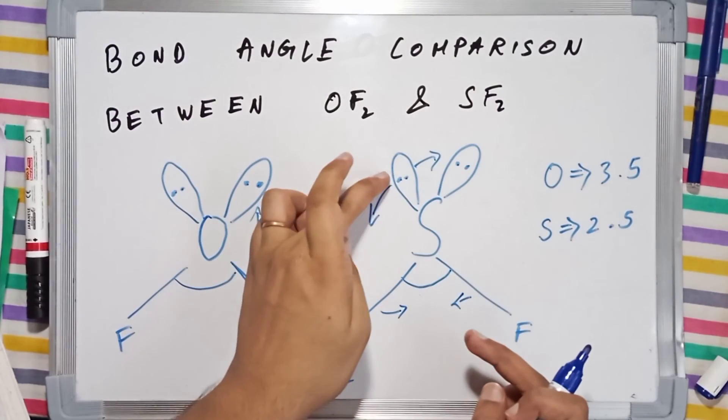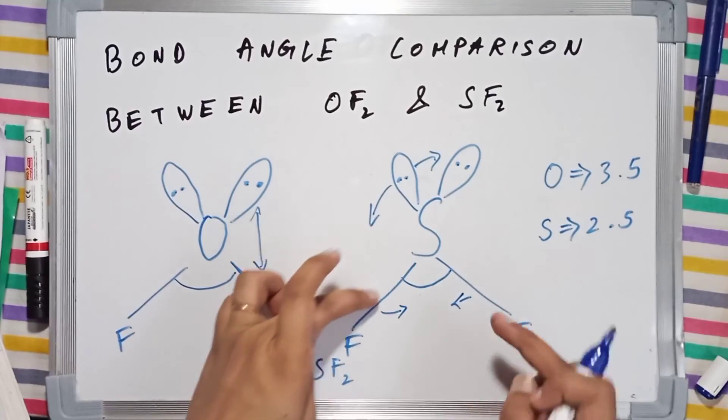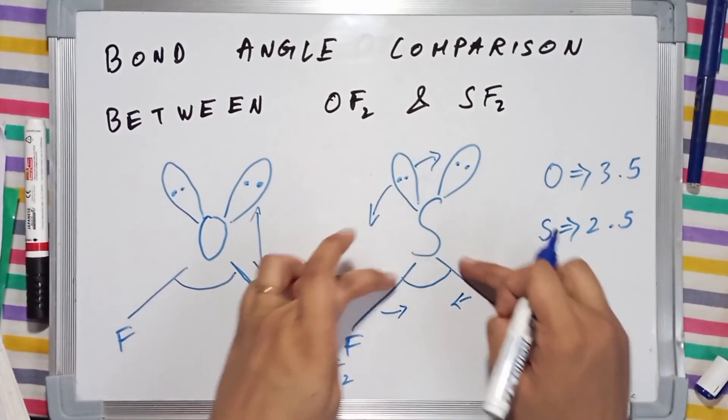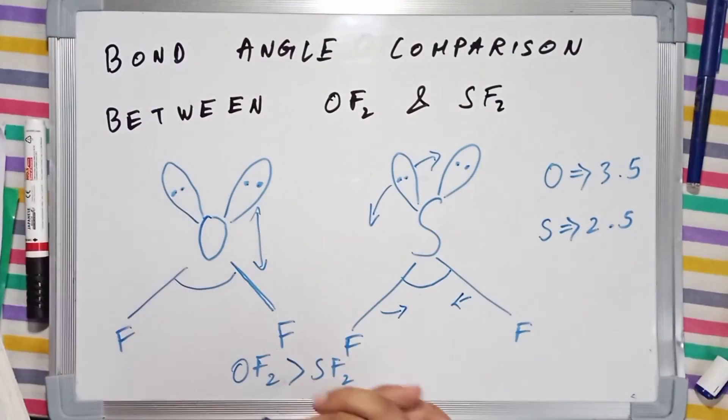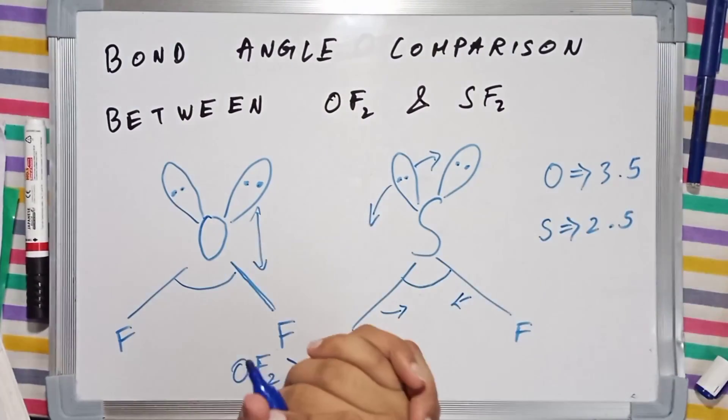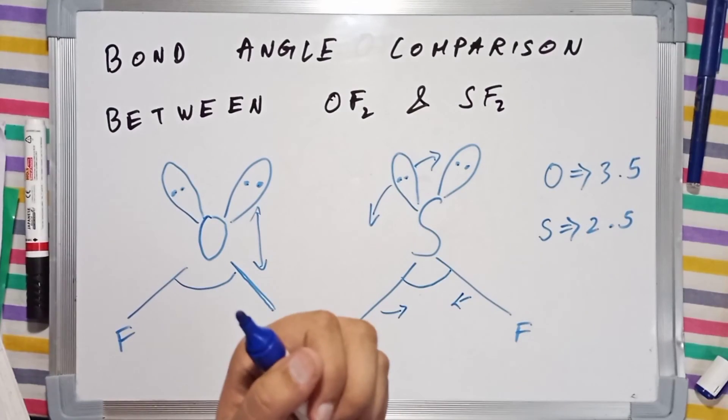the electrons are easily able to repel the electrons present in these bonds. So that was the bond angle comparison between OF2 and SF2. Thank you very much, and I'll see you in the next video. Please subscribe if you're finding these videos helpful in your academic life.